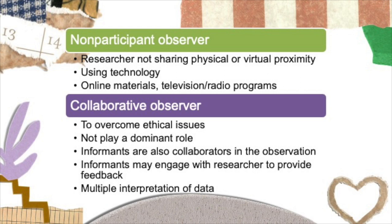In addition to the four roles discussed, researchers can also play roles such as a non-participant observer and a collaborative observer. A non-participant observer is where the researcher observes any scenario or social settings using technology such as online materials or television or radio programs. A collaborative observer is where the researcher wants to overcome ethical issues by informing participants of their purpose and inviting the participants to become observers as well. This type of observation leads to informants being able to discuss the interpretation of the findings, resulting in multiple interpretations of the data.